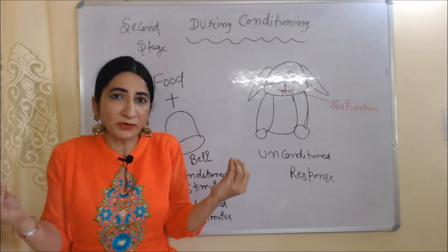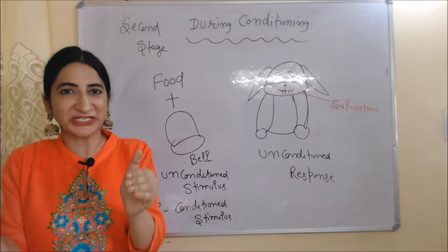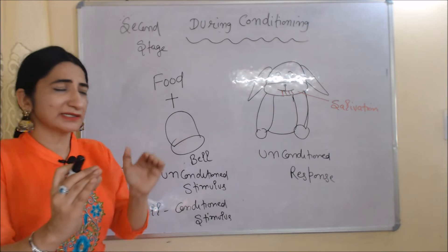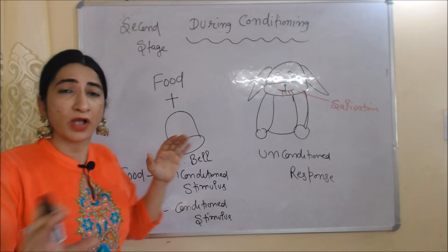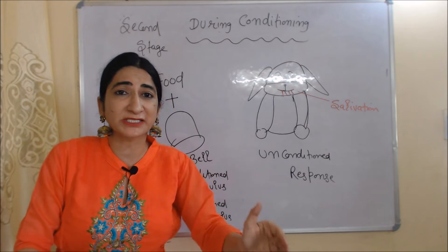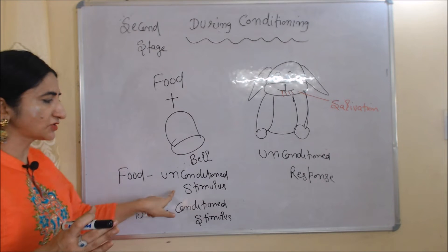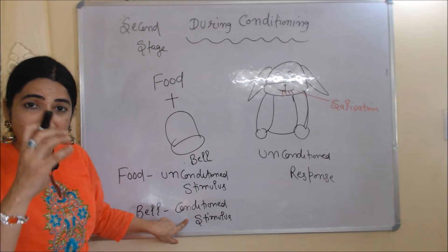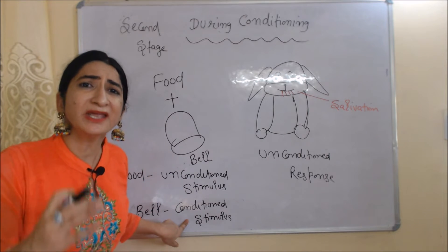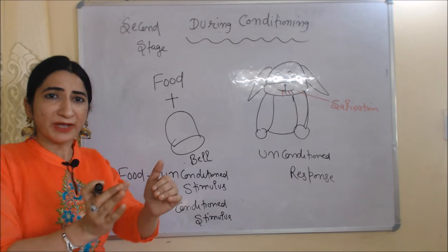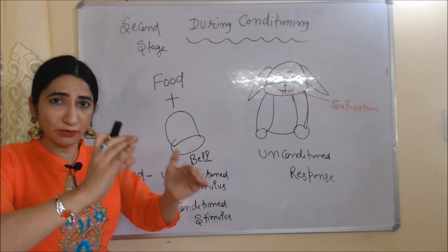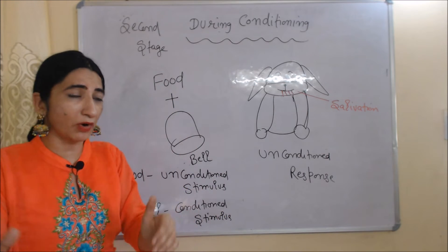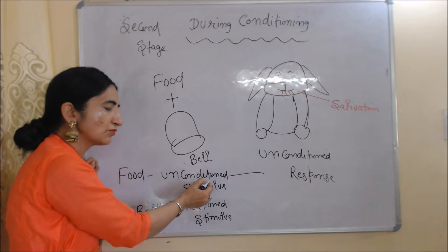Now we are going to talk about the second stage, which is called during conditioning. In this stage, we will actually do conditioning of the dog's mind. Here we will simultaneously present food and ring the bell in front of the dog — whenever we present food, we first ring the bell. Here, food is our unconditioned stimulus as discussed earlier, and the bell is now our conditioned stimulus. Earlier in the first stage the bell was a neutral stimulus, but now it becomes a conditioned stimulus because we are using it for conditioning the dog's mind. When we simultaneously present food and ring the bell, the dog salivates, and this salivation is called the unconditioned response, because our unconditioned stimulus — food — is also present.